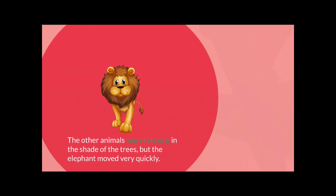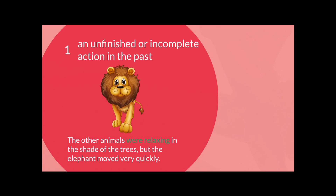Condition 1. Let's take a look at the example. The other animals were relaxing in the shade of the trees, but the elephant moved very quickly. From this sentence, the point of time in the past is when the elephant moved. The unfinished action is the other animals were relaxing. So, the first condition is when an unfinished or incomplete action is taking place at a point of time in the past.